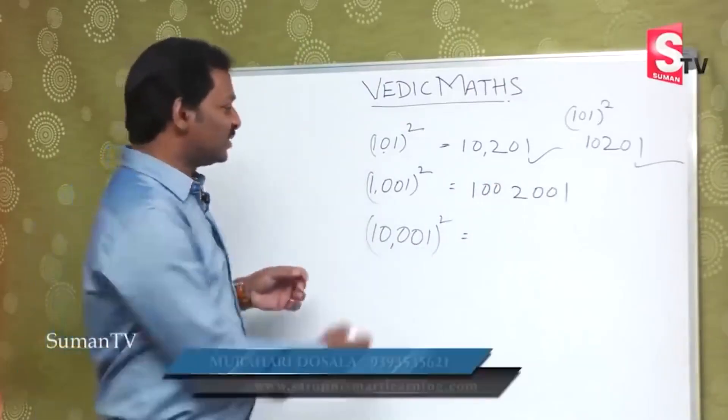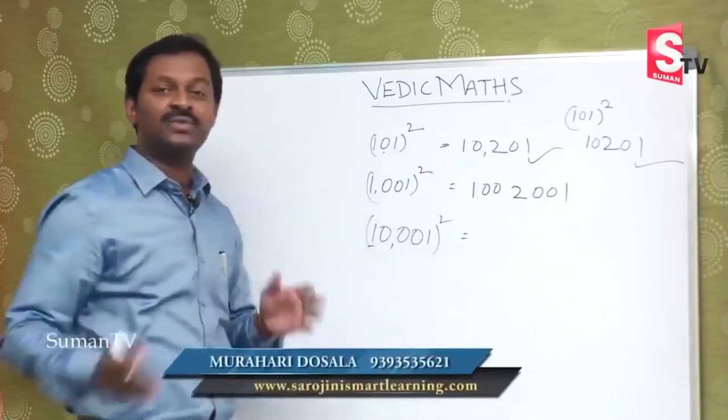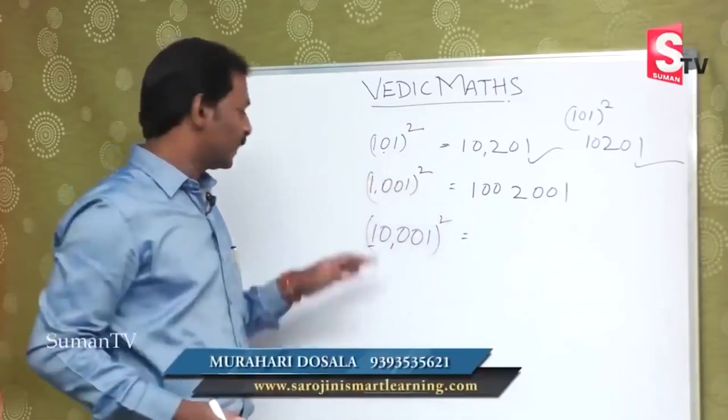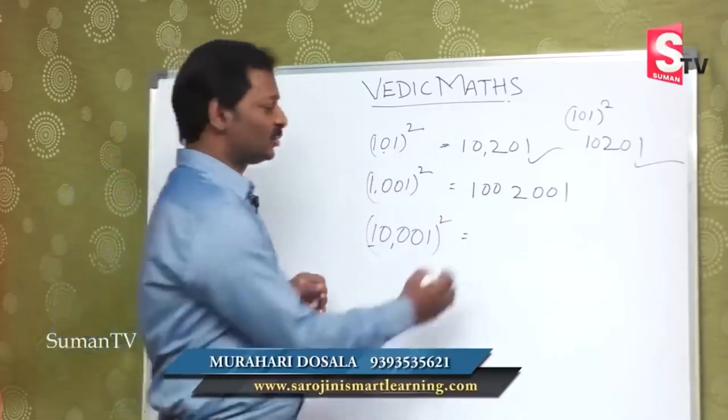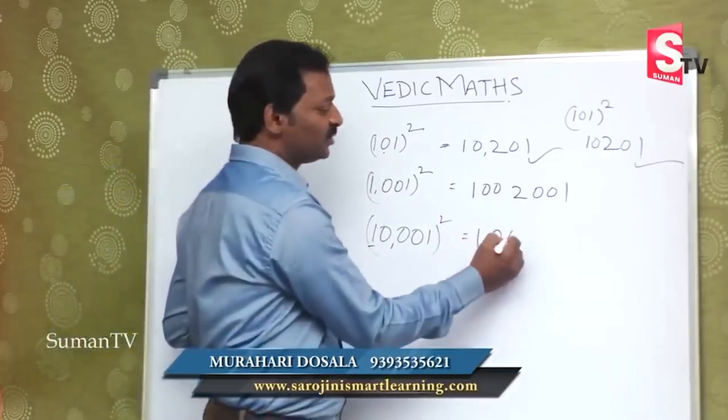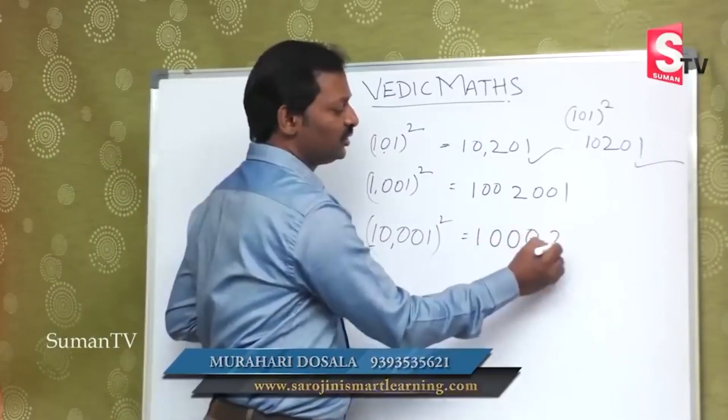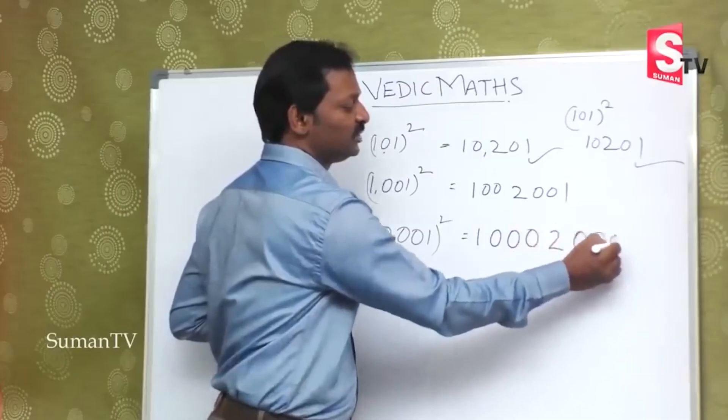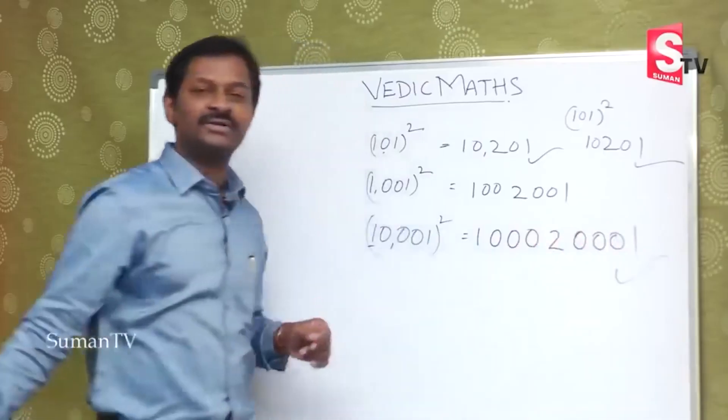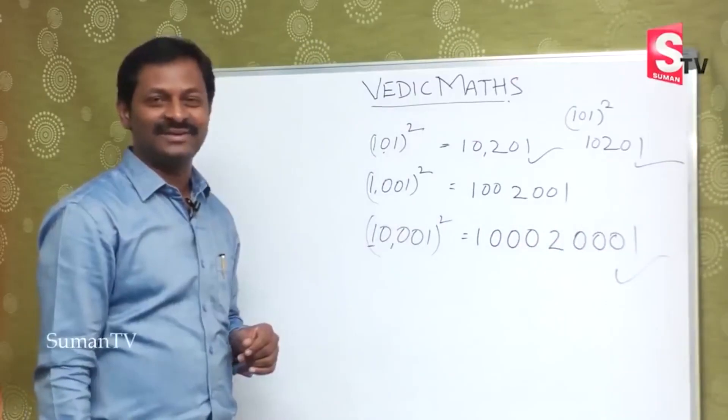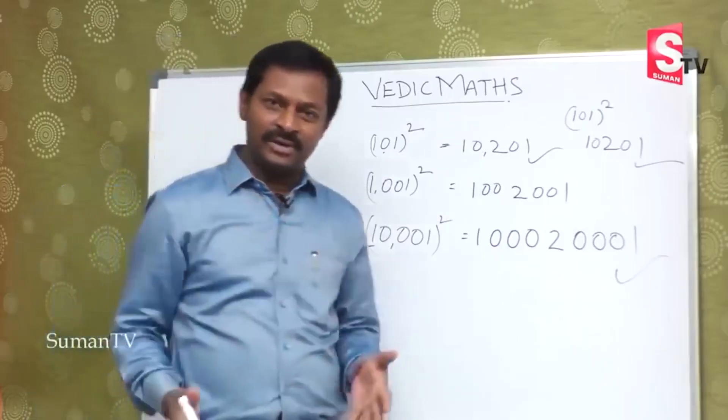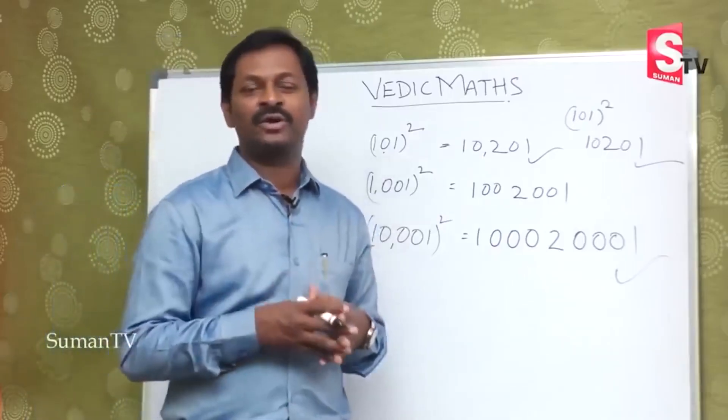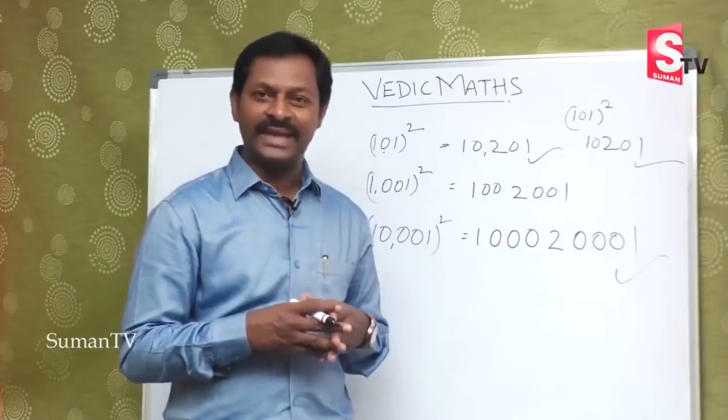So now we will check. So here 1, 1, 11, that is 1, 2, 1. So 1, 0, 0, 0, 2, 0, 0, 0, 1. Have you understood? Yes. So we will check. Thanks for watching.